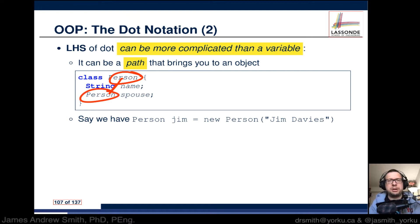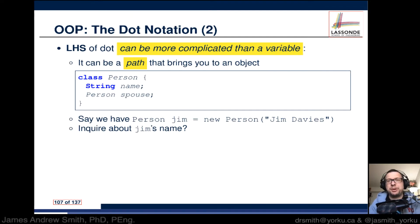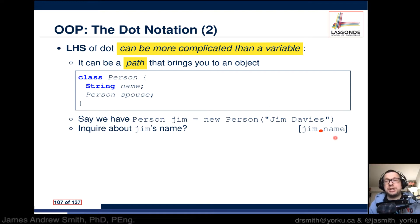That's acknowledged in object-oriented programming. For instance, let's say we have a Person object named Jim. We instantiate it as an object based on Person by calling the constructor and naming the object Jim Davis. We can do an inquiry about Jim's name — we say Jim.name — and that will return the value of the attribute name. We're just asking what the attribute name is.